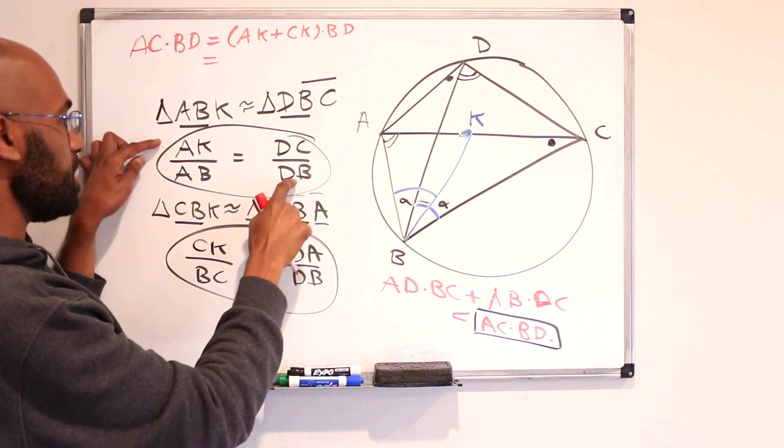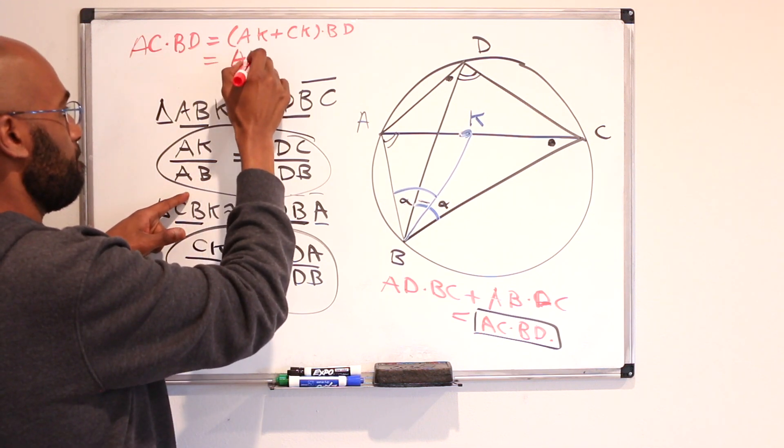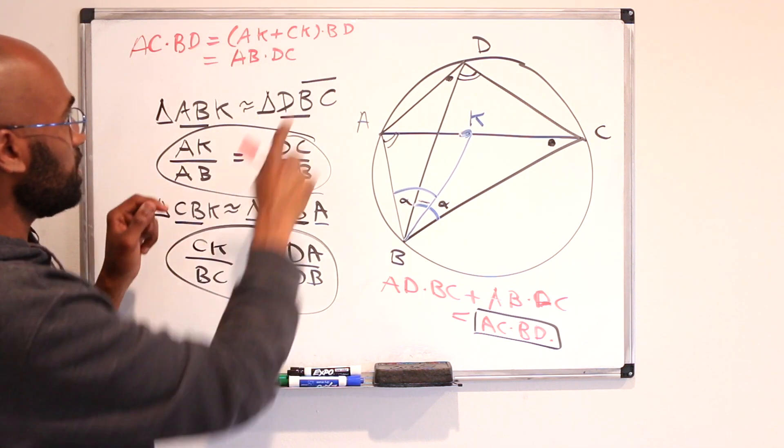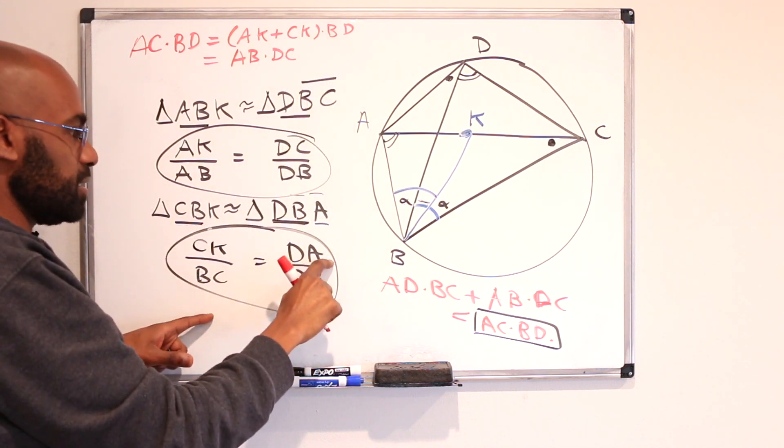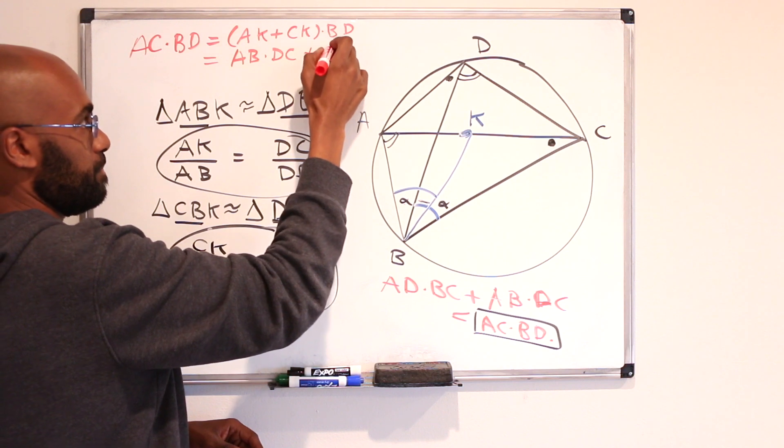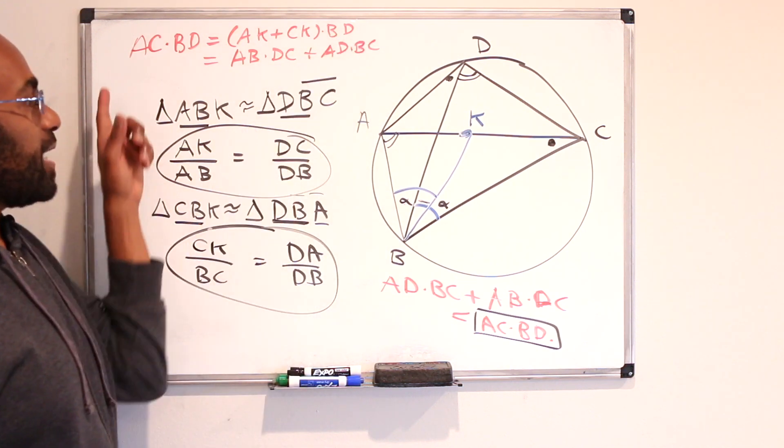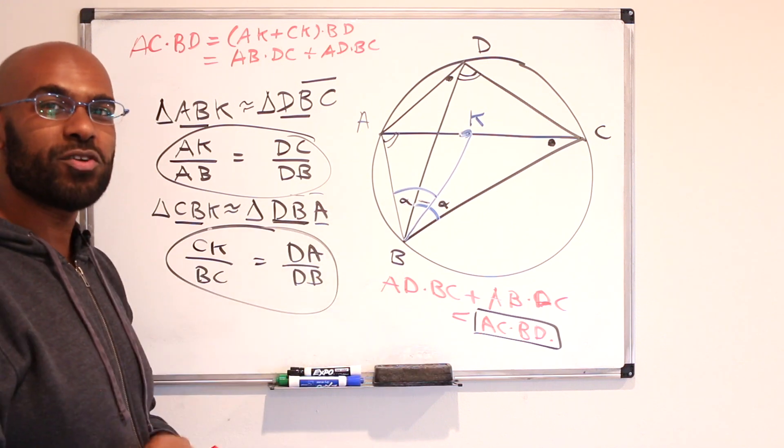And CK times BD is AD times BC and that's exactly the expression that we wanted for Ptolemy's theorem.